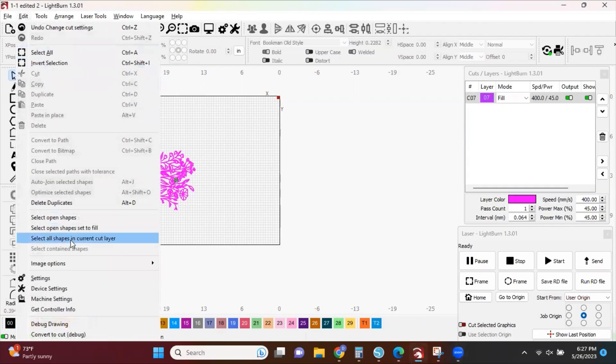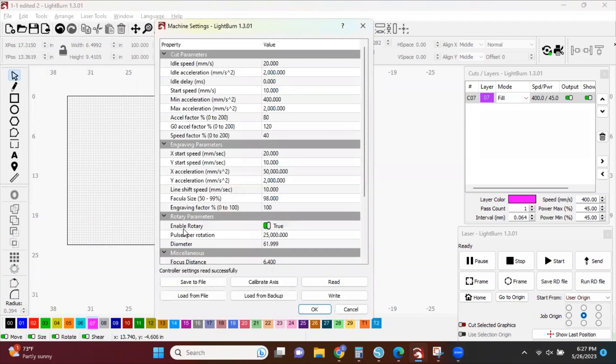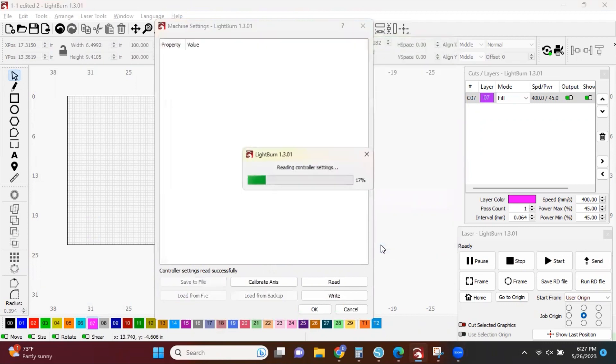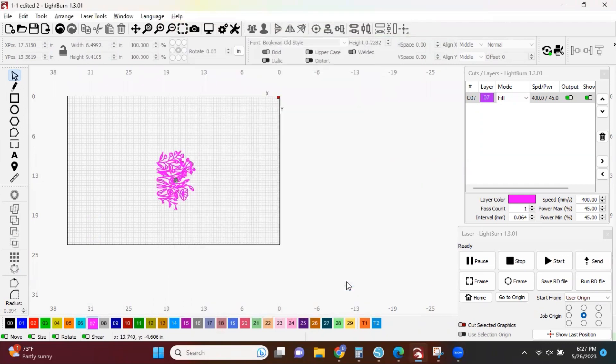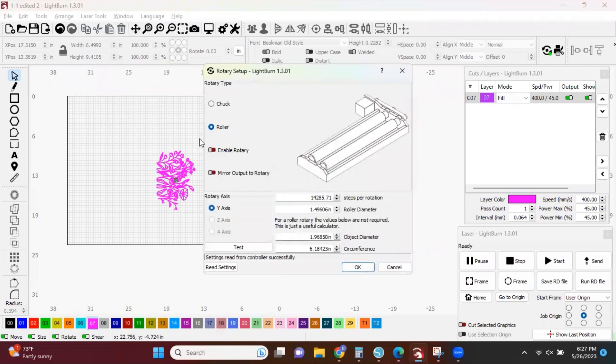To get the machine back to the flat lay settings, we're going to go to Edit Machine Settings. We're going to go to Laser Tools, Rotary Setting, and see the Enable Rotary is red. Click OK.